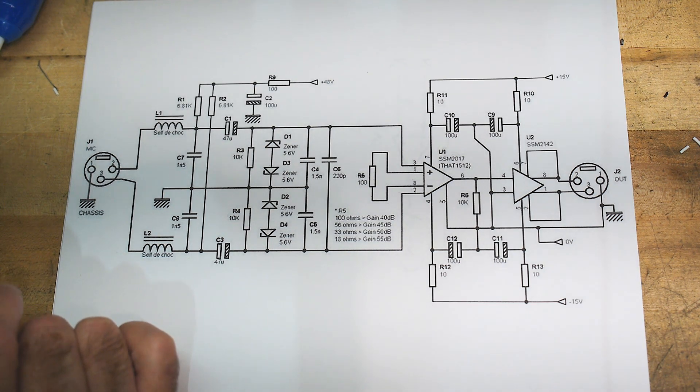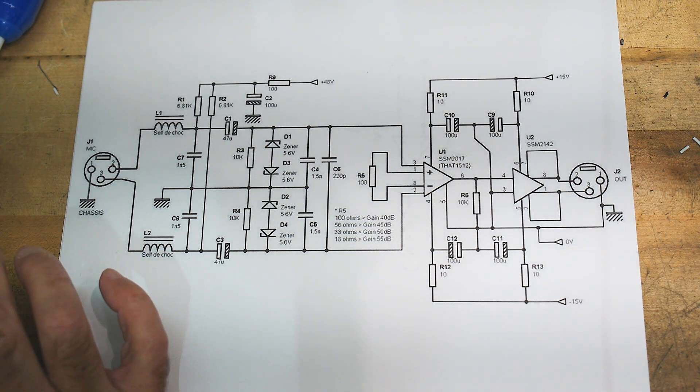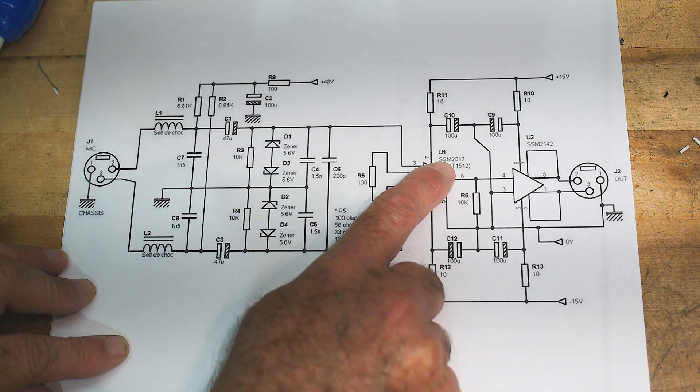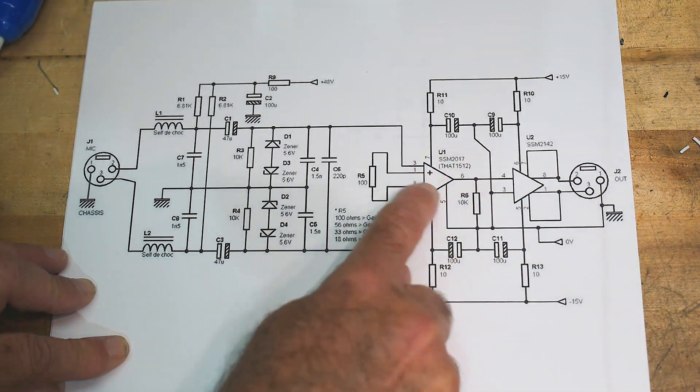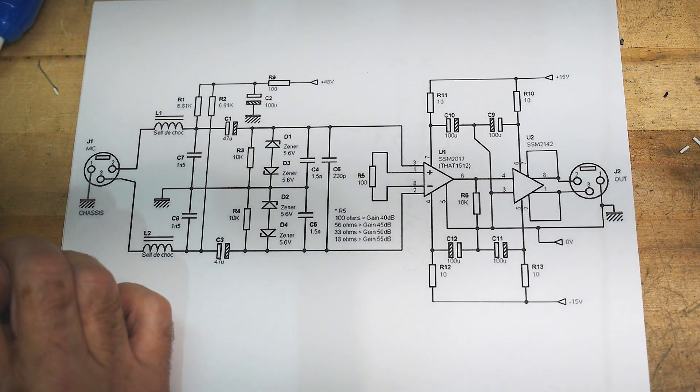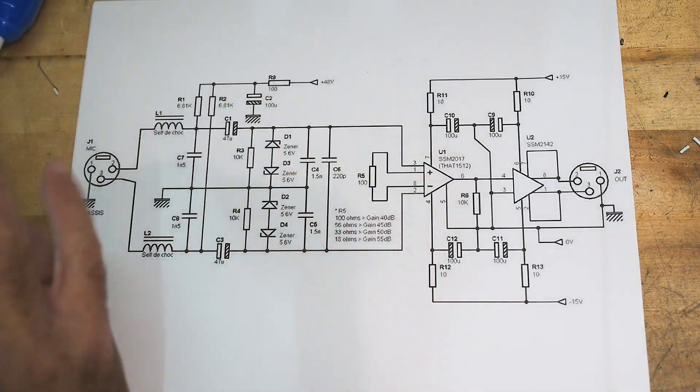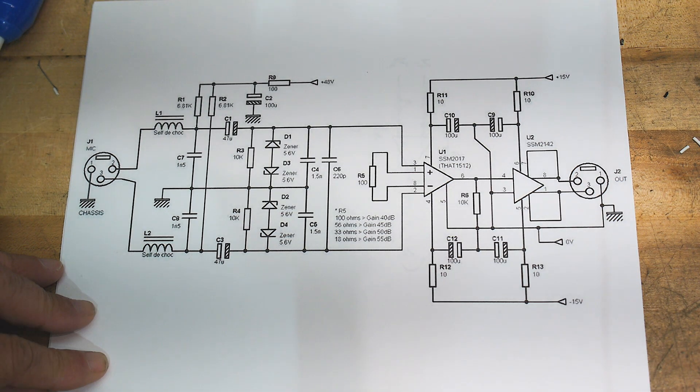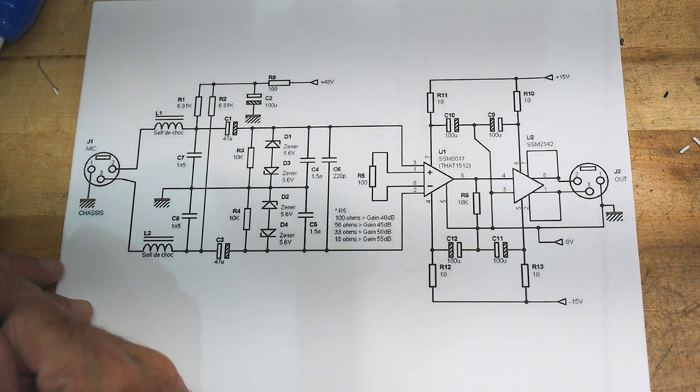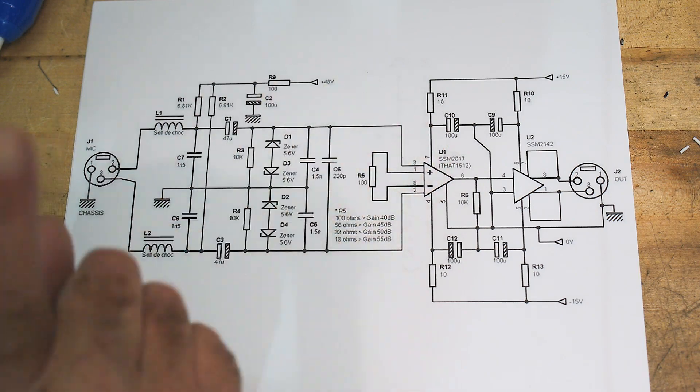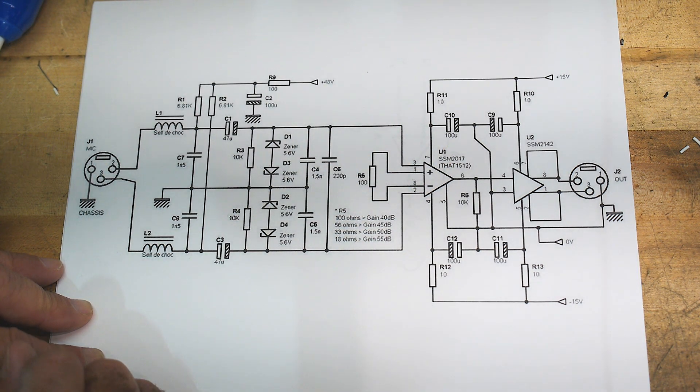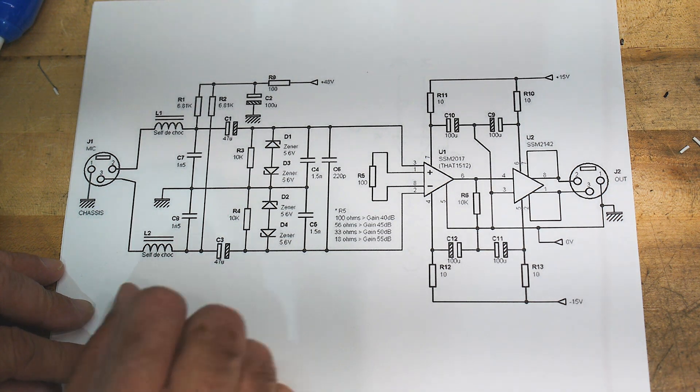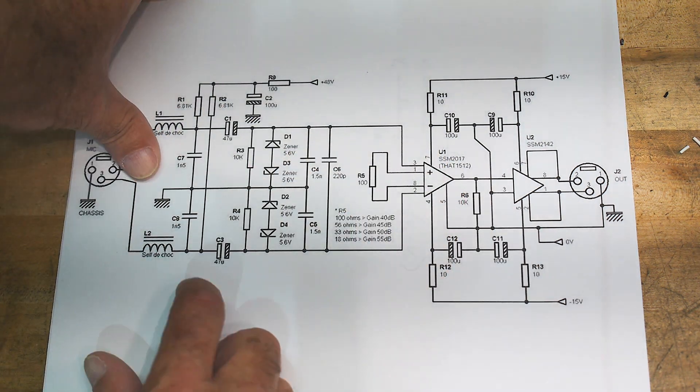It's usually called a differential amplifier or an instrumentation amplifier. This is an SSM 2017, a popular chip that kind of does all the magic. This was popular in some of the more expensive amplifiers and I don't think it's built anymore, but there is a replacement. I want to talk about instrumentation amplifiers or difference amplifiers.